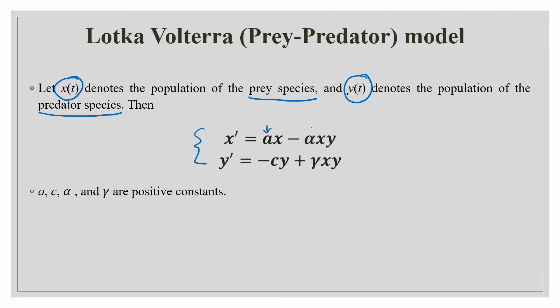Here these constants are positive and obviously when your Y is 0, that means that if this component is 0, then the prey population will grow exponentially because this will then become 0 and you will have only this component and the prey species will grow exponentially.